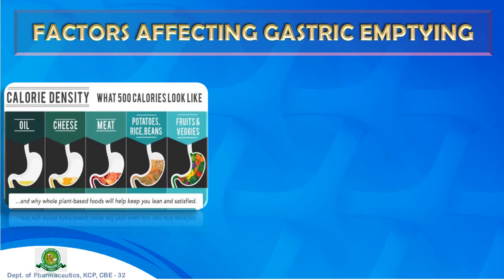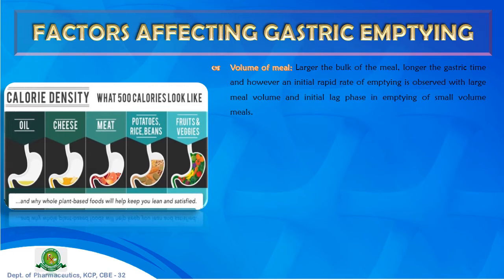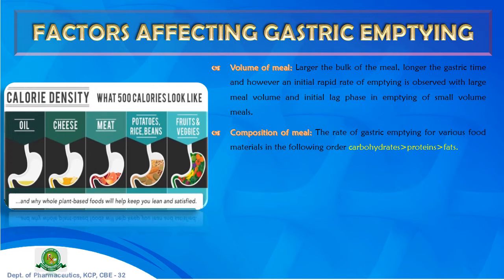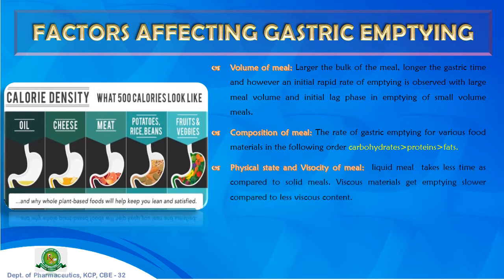Factors affecting gastric emptying: First, volume of meal — a larger meal volume leads to a longer gastric emptying time, though an initial rapid emptying phase is observed with large volumes. Second, composition of the meal — the rate of emptying follows the order: carbohydrates > proteins > fats, meaning fatty meals delay emptying the most. Third, physical state and viscosity — liquid meals empty faster than solid meals; higher viscosity slows emptying.